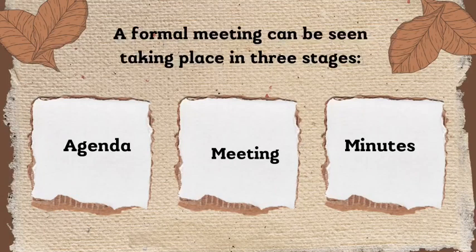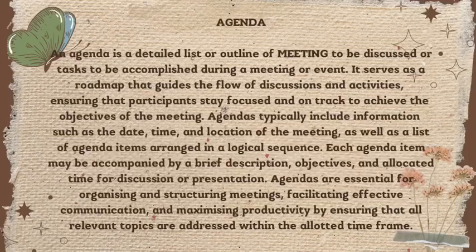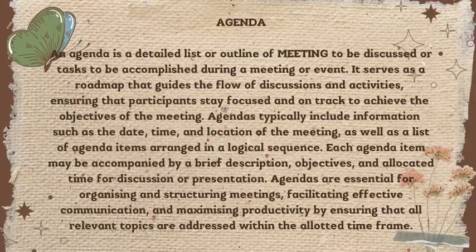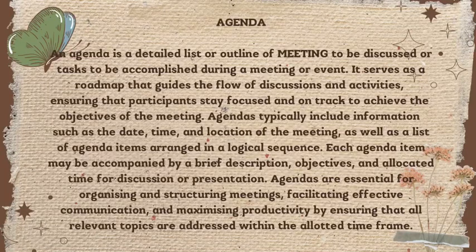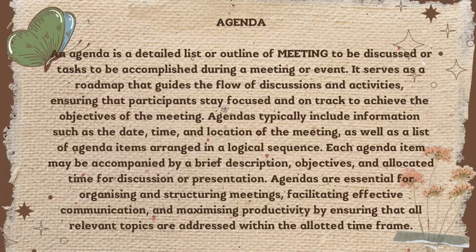The three stages are: Agenda, Meeting, and Minutes. So let's look into them one by one. An Agenda is like a to-do list for a meeting, outlining what will be discussed and in what order, or a list of topics or items to be discussed or acted upon during a meeting — just like a roadmap for the meeting's proceedings.